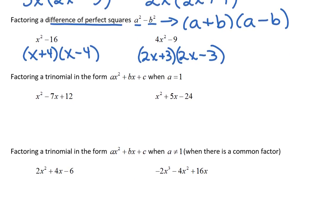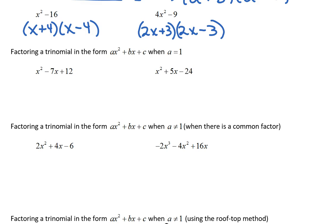We move from there into factoring trinomials, and we start out factoring trinomials when a=1. When a=1, we start out with c and looking for factors of c: 1×12, 2×6, and 3×4. We know that in order to give us positive 12 they need to have the same signs, and in order to add to give us -7, they must both be negatives. So it's either going to be -1 and -12, -2 and -6, or -3 and -4. Well, of those, the only ones that add to give me -7 are -3 and -4, so we're going to say (x-3)(x-4).